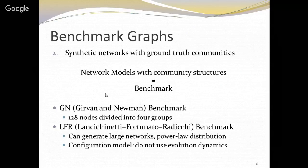The GN benchmark graph has limitations such as being limited to 128 nodes divided into only four groups. LFR does not have this kind of limitation — you can create a huge network and generate networks with degree distribution following the power law. But the problem with LFR is that it uses the configuration model and does not use evolution dynamics. This is one of the key problems with the LFR benchmark graph.